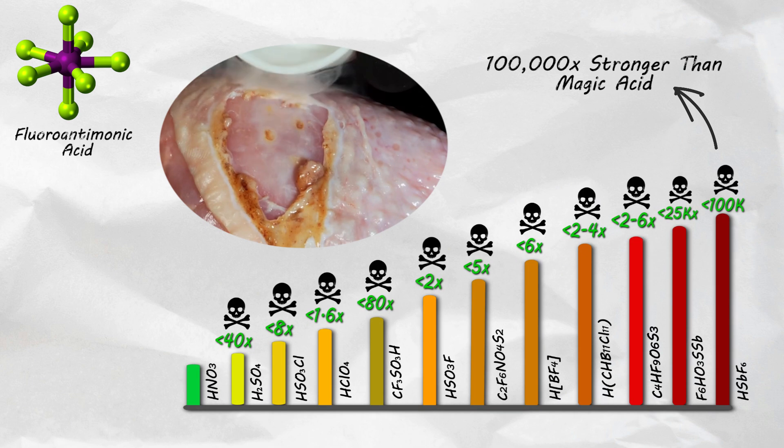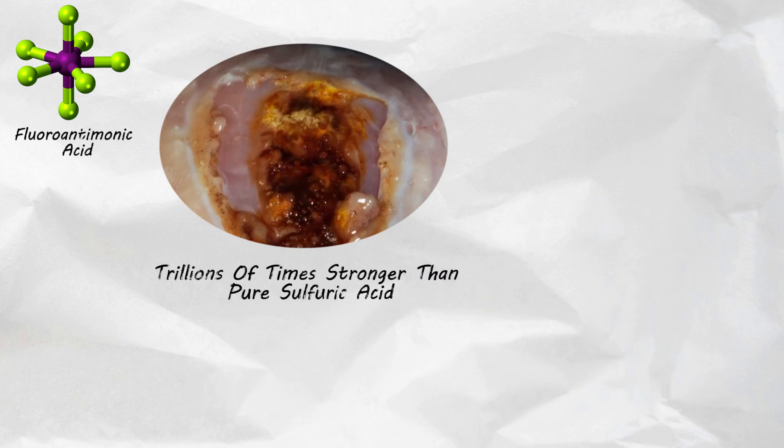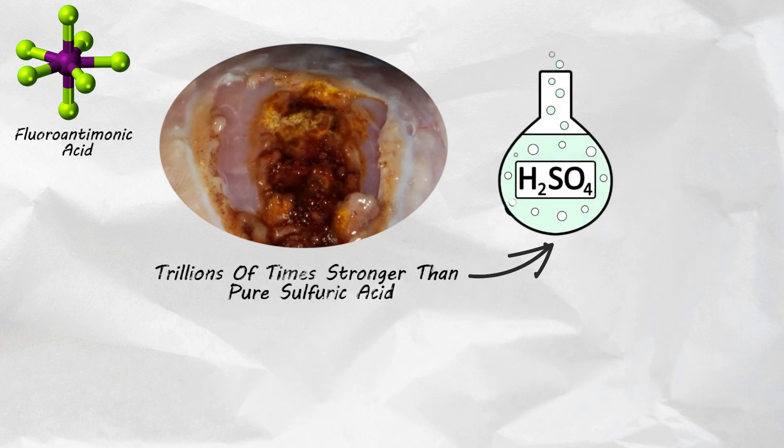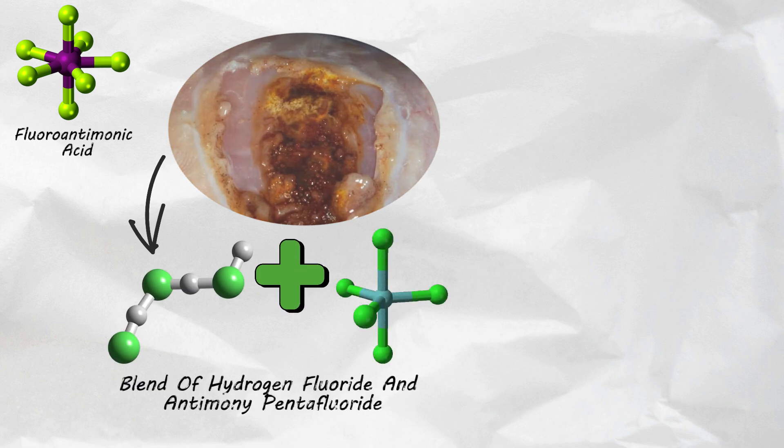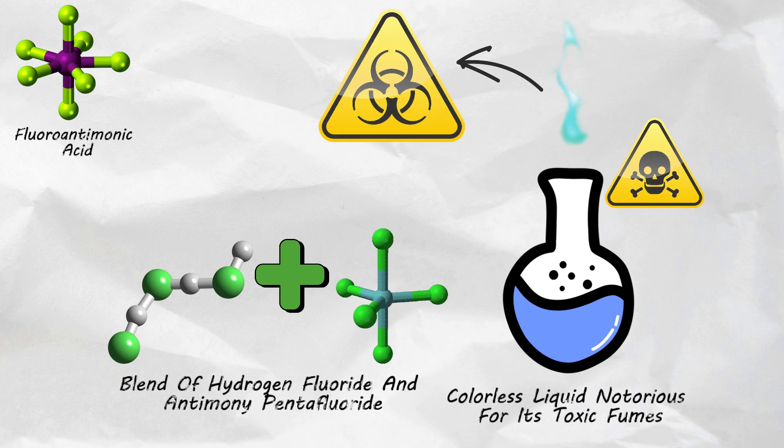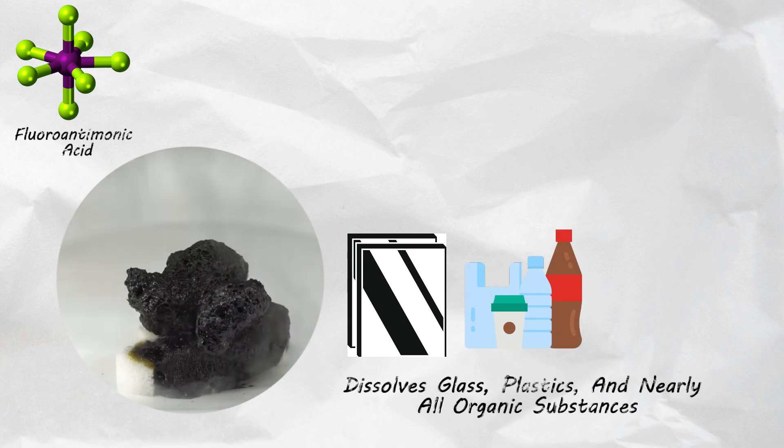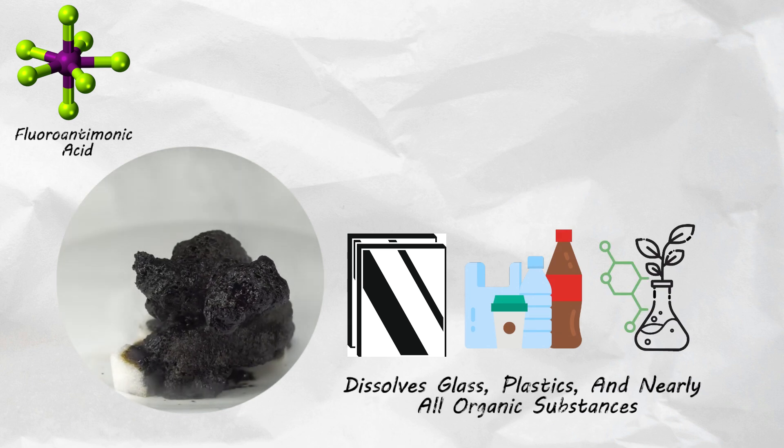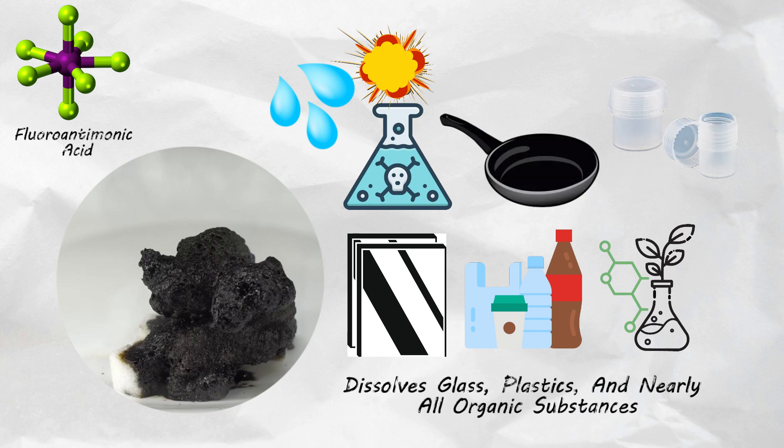Fluoroantimonic acid. The world's strongest acid is 100,000 times stronger than magic acid and trillions of times stronger than pure sulfuric acid. This stuff is a blend of hydrogen fluoride and antimony pentafluoride. It's a colorless liquid notorious for its toxic fumes. It's so reactive that finding materials it won't attack is a challenge. This potent acid dissolves glass, plastics, and nearly all organic substances and even reacts explosively with water. It can only be kept in a Teflon or PFA container.